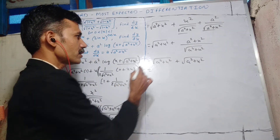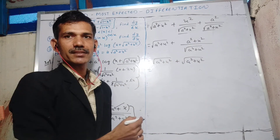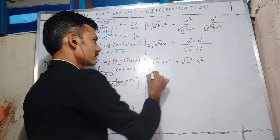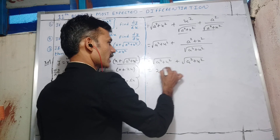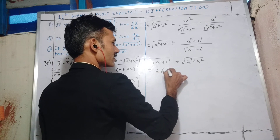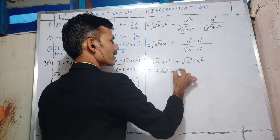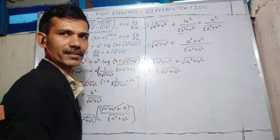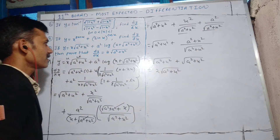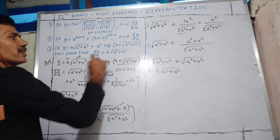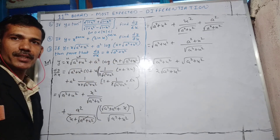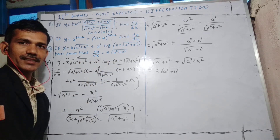Now the denominators of the remaining terms are the same: √(a²+x²). Adding the numerators: x² + a²+x² = a²+x²+x² — writing it as (a²+x²), which equals √(a²+x²)·√(a²+x²), one root cancels, giving 2√(a²+x²). That is what we had to prove.